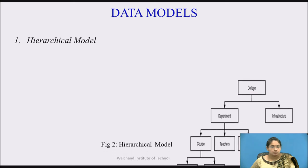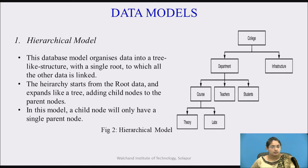Let's start with the hierarchical model. This database model organizes data in a tree-like structure where you have a single root to which all other nodes are connected. The hierarchy starts from the root node and expands like a tree, adding child nodes to the parents. In this model, a child node will only have a single parent. It's a tree-like structure where you have a parent node further divided into child nodes, and those child nodes become parent nodes divided further.